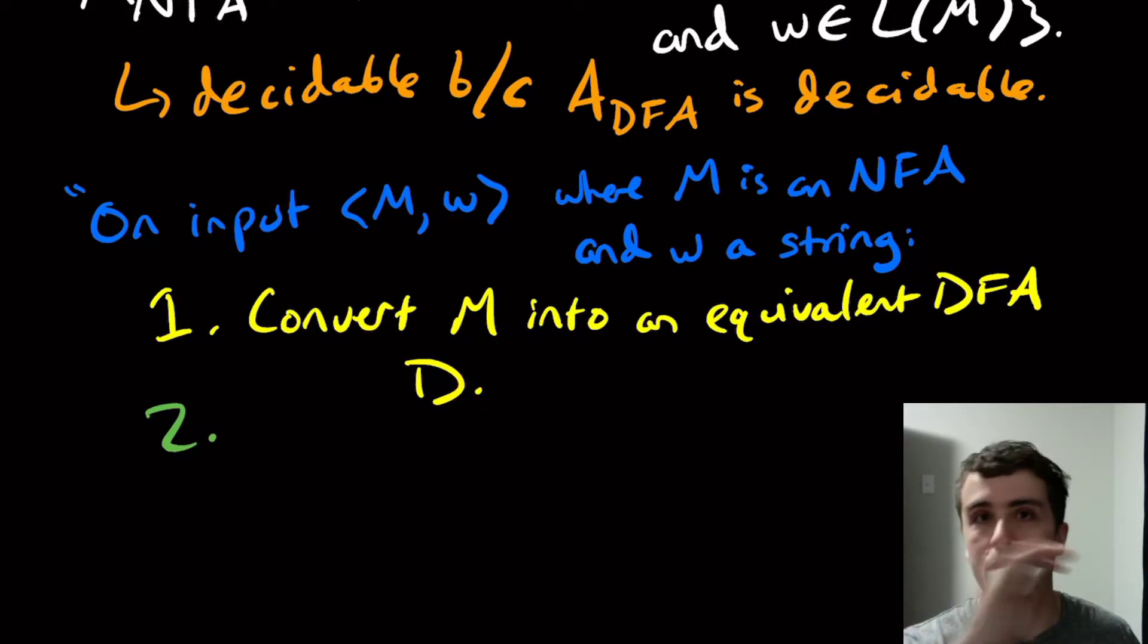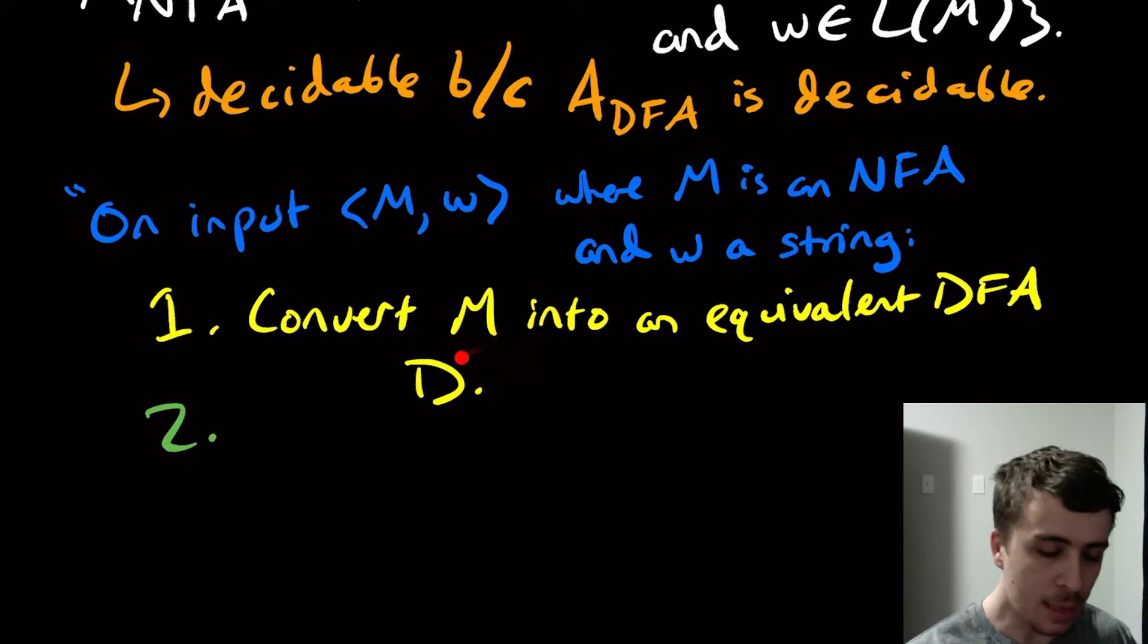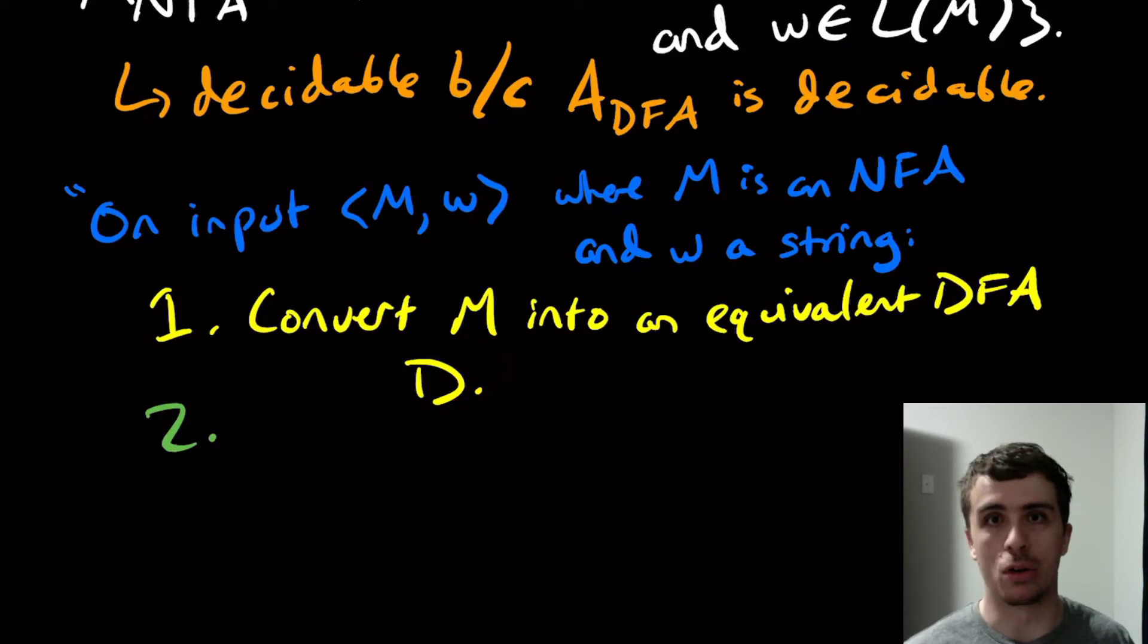And we know that this takes a finite amount of time because we can just list all 2^n possible subsets of states using the power set construction and fill out the transition table just like we would normally do. Or we can do the build your states method. It doesn't really matter.